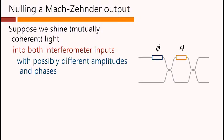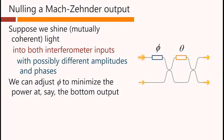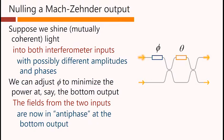Suppose we shine mutually coherent light into both interferometer inputs, with possibly different amplitudes and phases. We can adjust phi to minimize the power at, say, the bottom output.